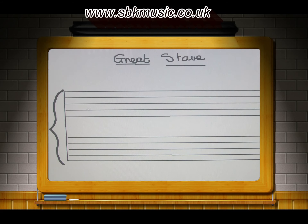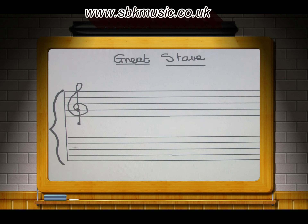A treble stave and a bass stave, which we read simultaneously if we're going to play the piano or keyboard. We put our treble clef — remember that from the previous lesson — our treble clef sits here on the second line up, and the bass clef on the second line down. So we've got right hand music and left hand music.